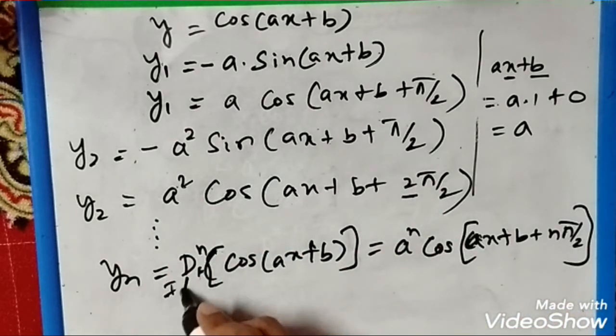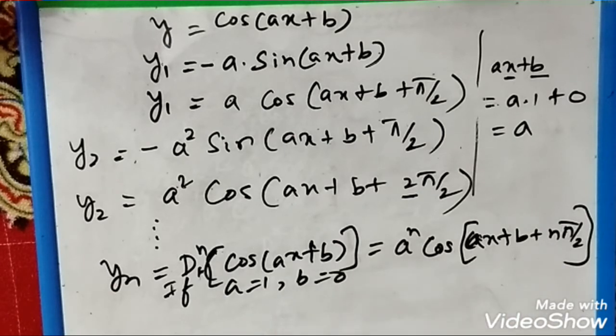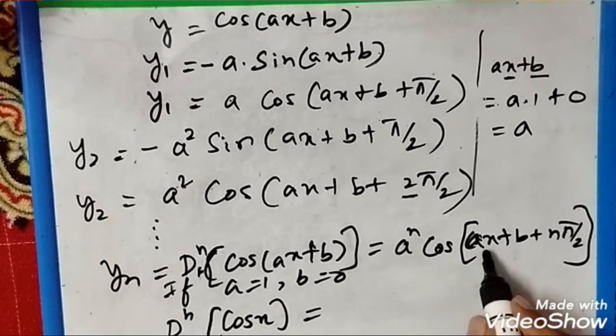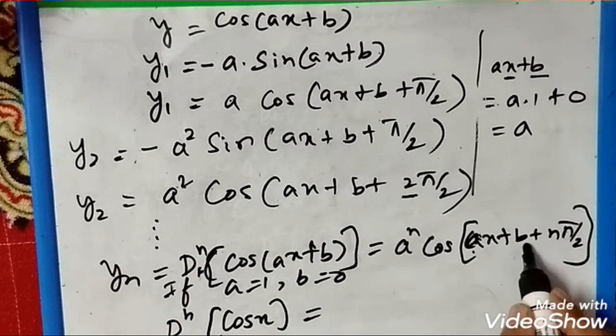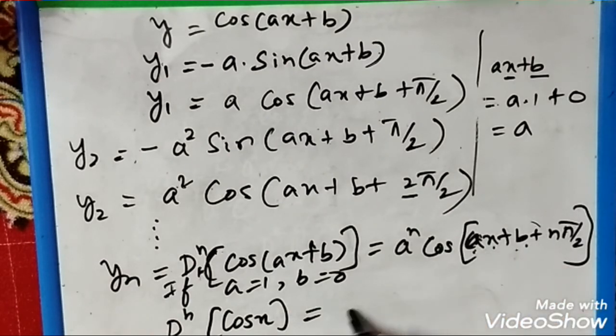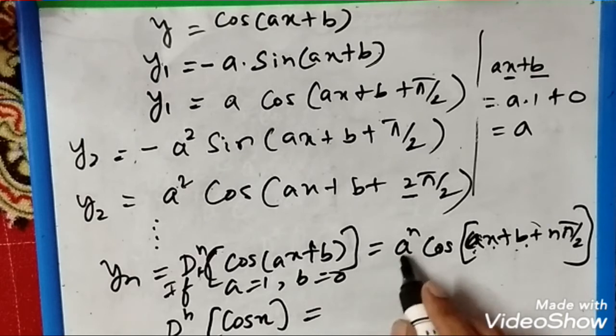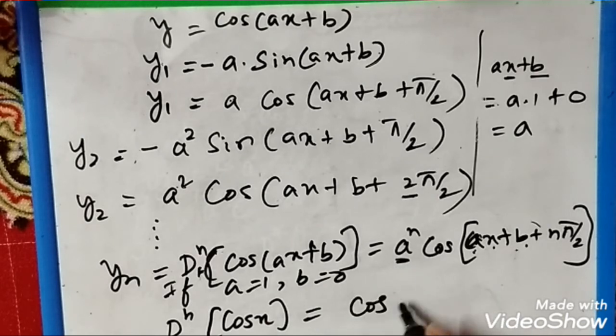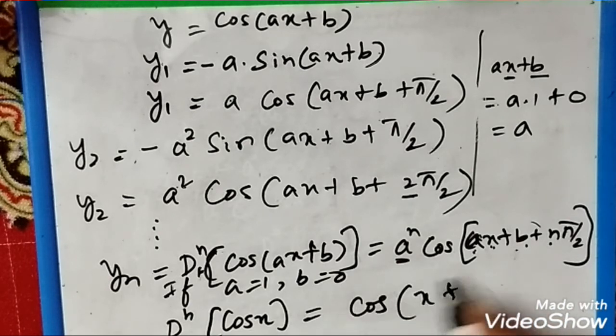Now let us take a = 1 and b = 0, and substitute to see what we get. The nth derivative of cos(x) becomes: with a = 1 and b = 0, we have a^n = 1, so the final answer is cos(x + nπ/2). Thank you for watching our video.